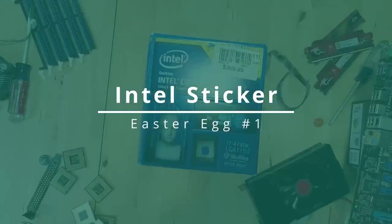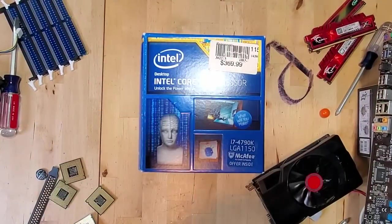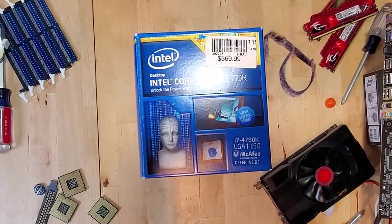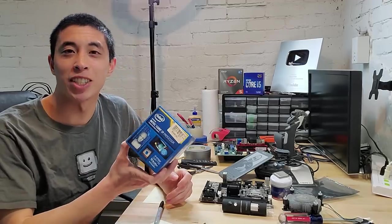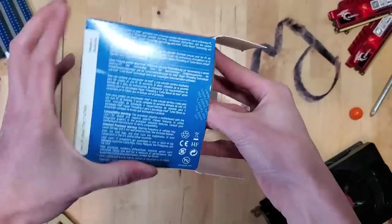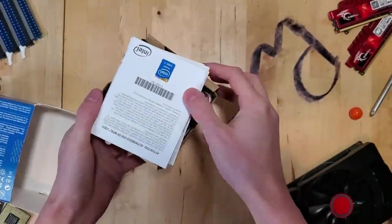Alright, starting off with our first Easter egg, there's a good chance you might actually be able to uncover this one yourself at home if you happen to have built your own computer. This here is the packaging of an older Intel CPU. And if we unbox it and look carefully, we should be able to find a sticker.